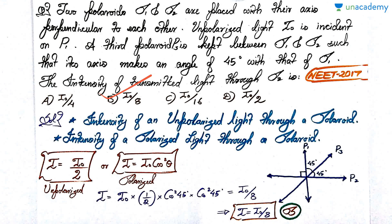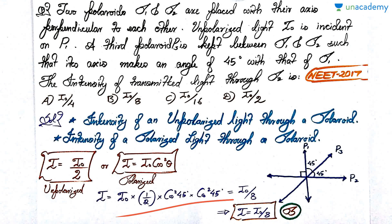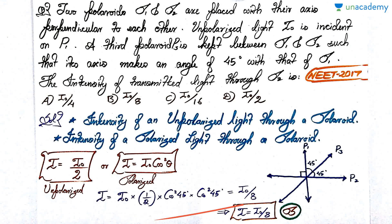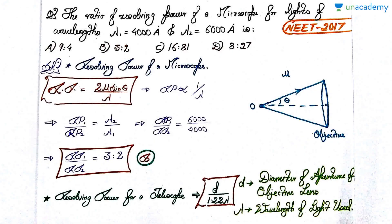It's essentially a three-step answer, but you can do it in one step by multiplying all the factors together and writing the answer directly. That's how you solve this question quickly. Let's move on to the next one.